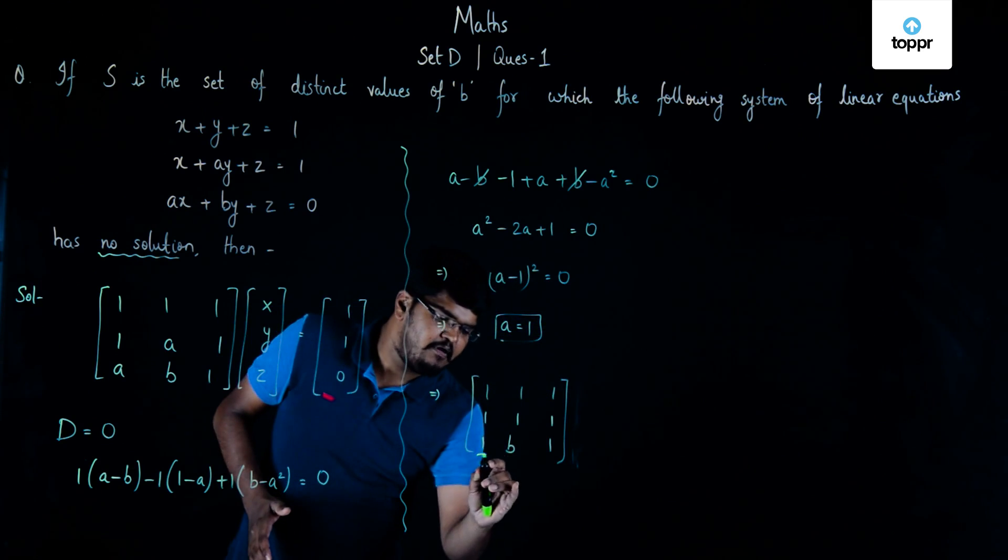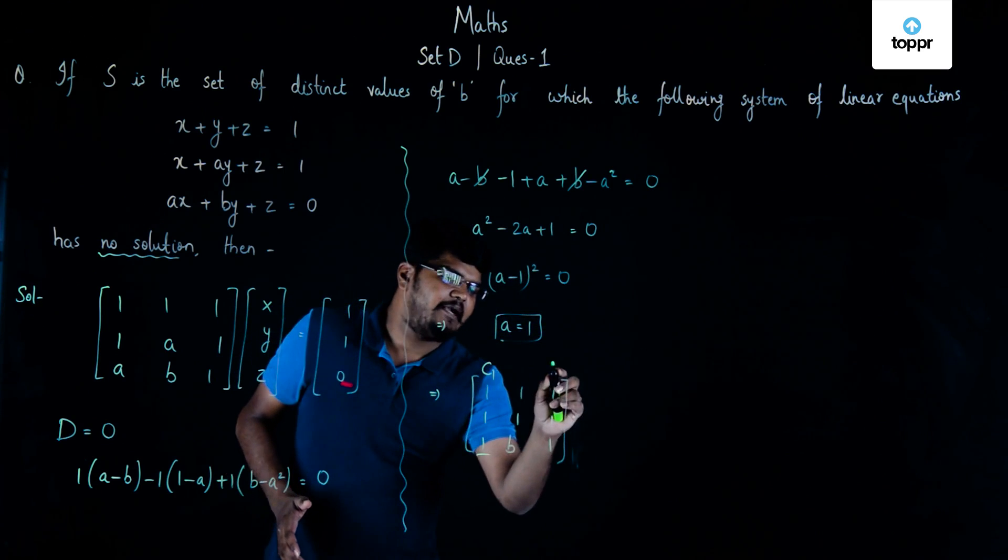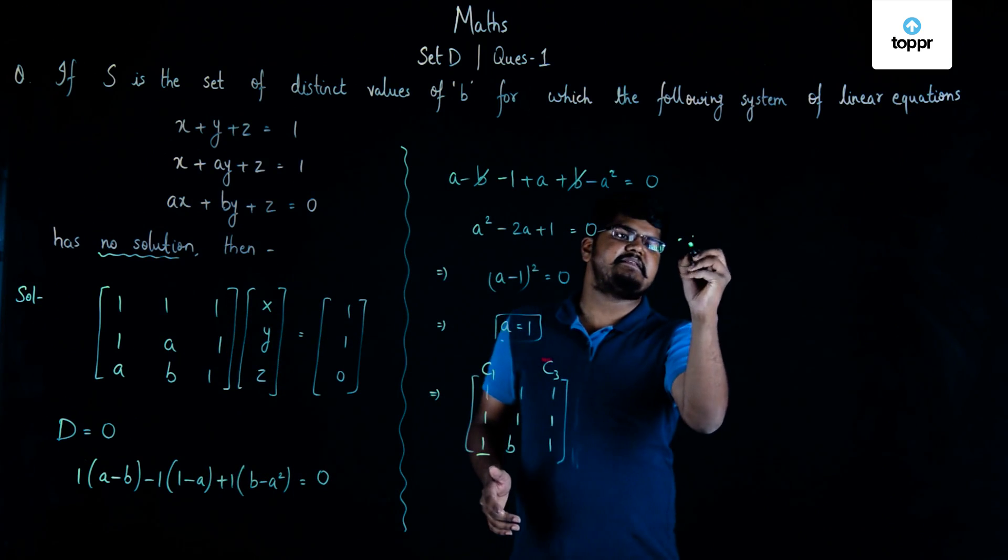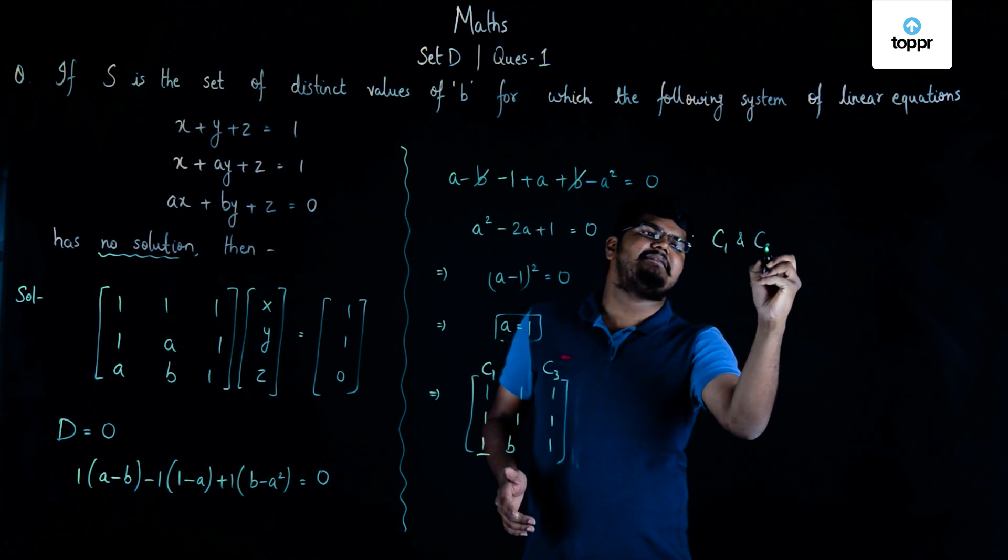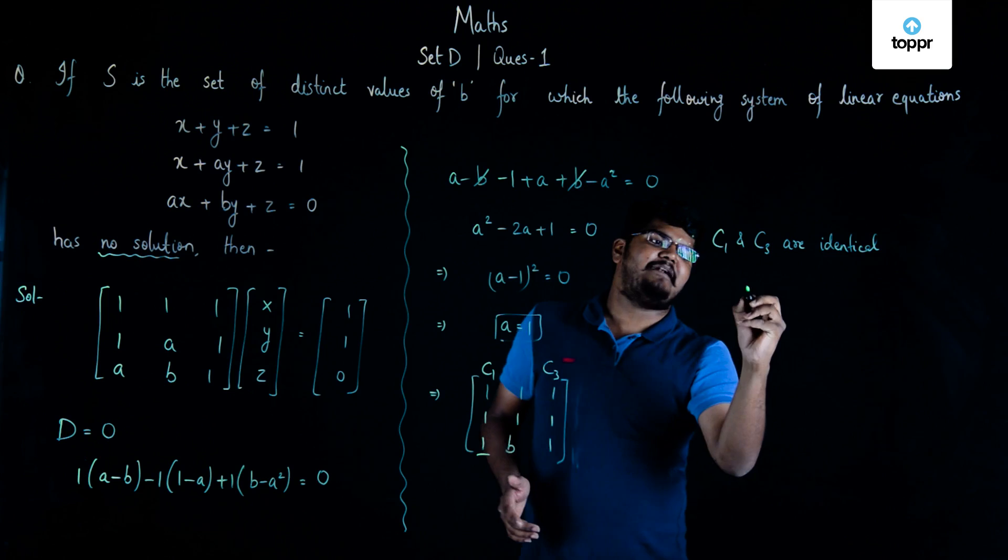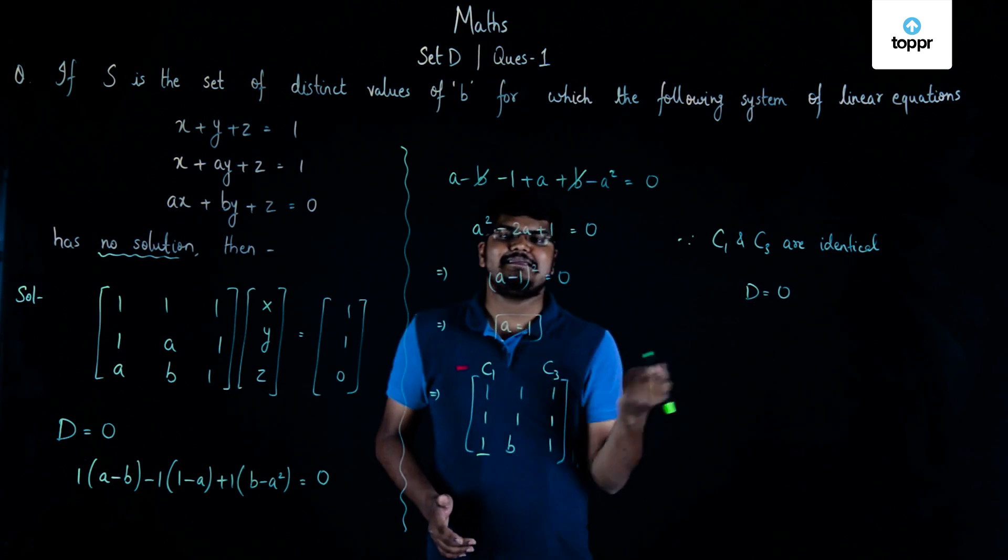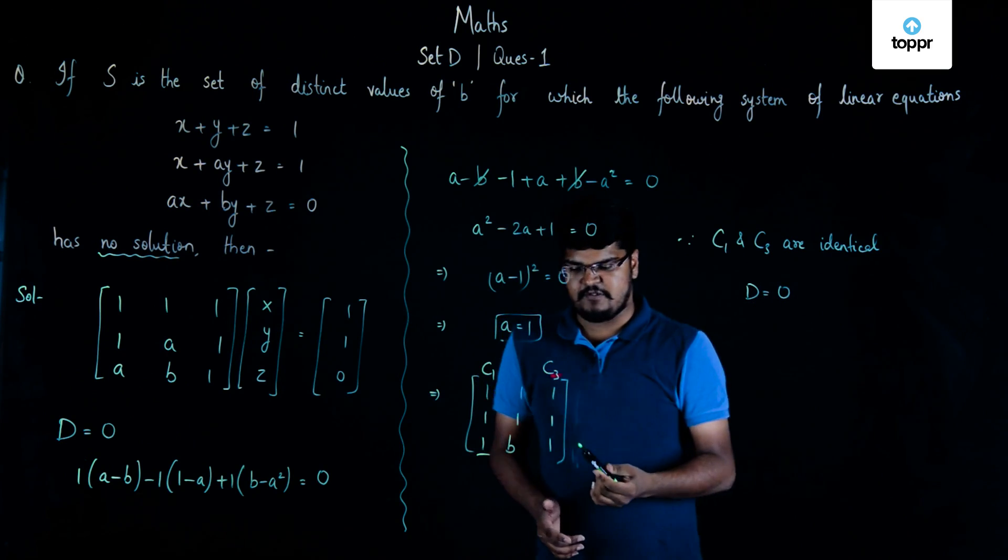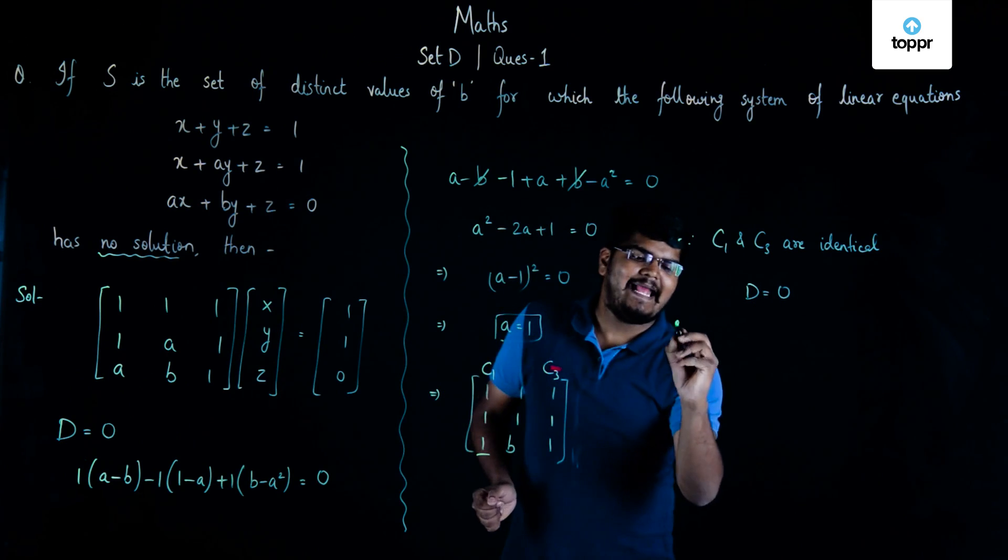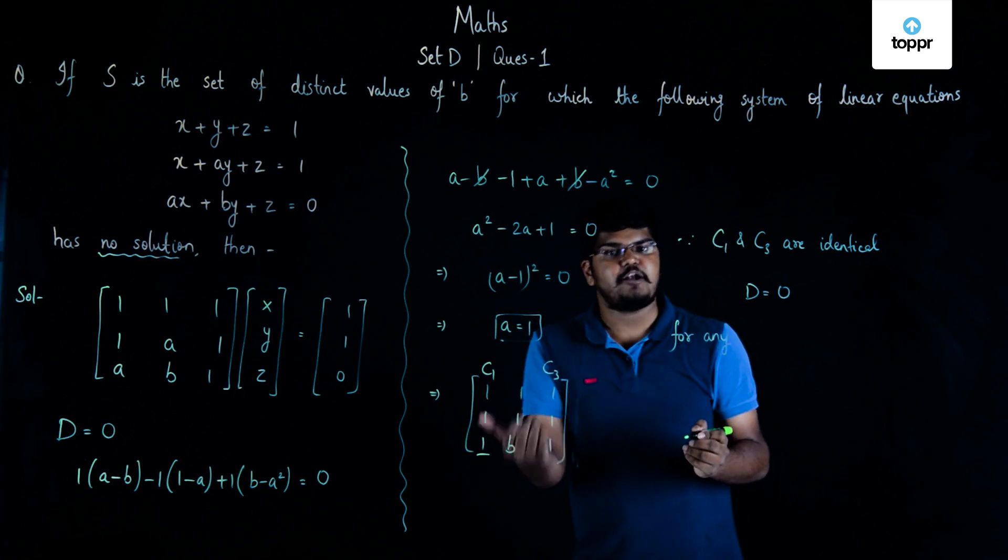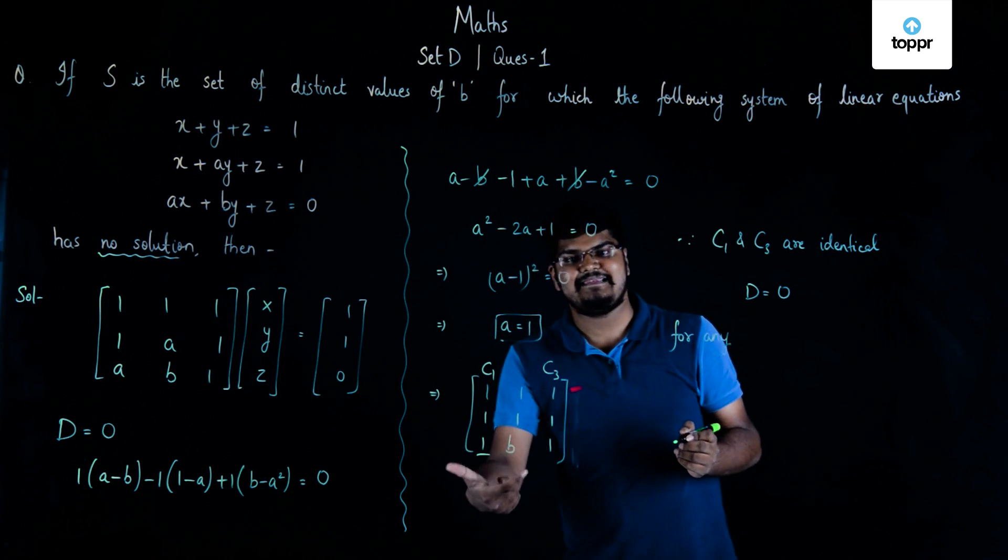Here you can see that we have column 1 and column 3 as identical to each other. Since C1 and C3 are identical, the determinant of this particular matrix will always be 0. Since the determinant of this matrix will always be 0, we can say that for any value of B...